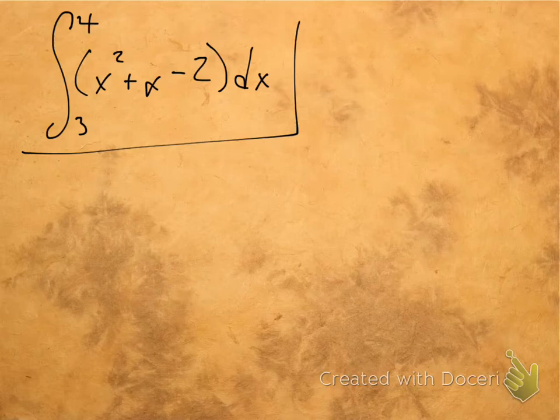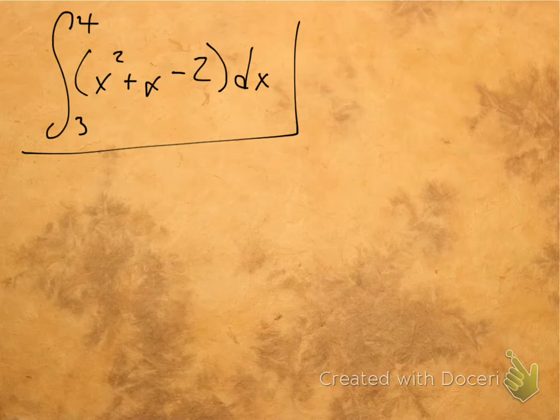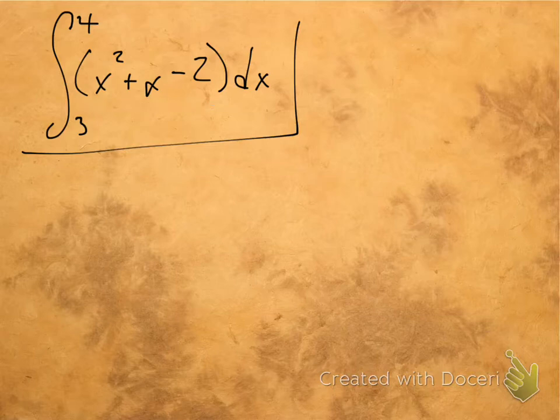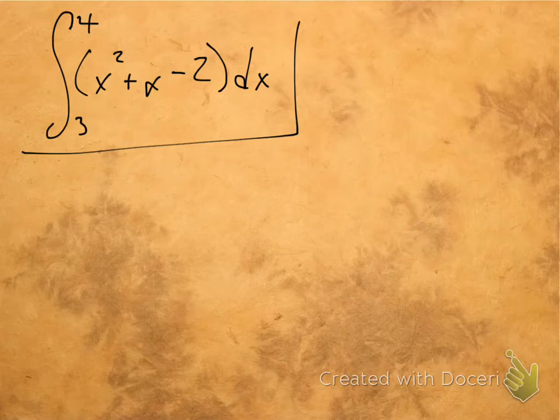So let's go ahead and take the antiderivative of this. We're taking the antiderivative of this part right here, of course. So how do we do this? What do we need to do? Well, this first thing here, this is a little exponent, x squared.